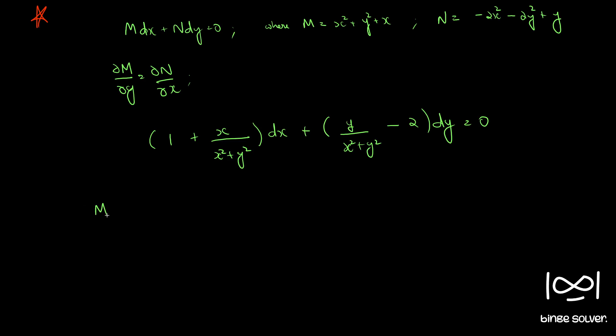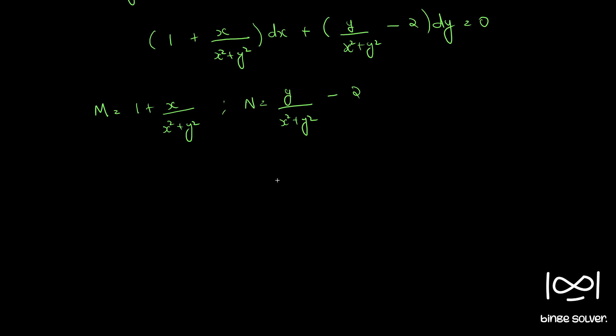So our new m becomes m equal to 1 plus x by x square plus y square. And n equal to y by x square plus y square minus 2. So here, there is some kind of symmetry here. That is the reason why ∂m/∂y and ∂n/∂x becomes equal if we do this rearrangement.